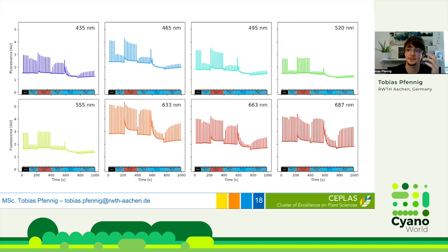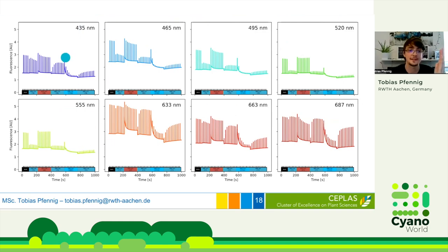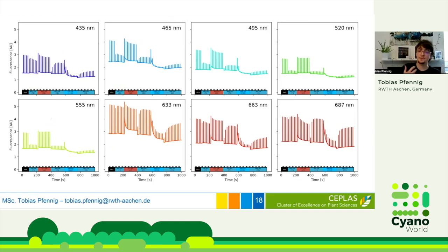Since we model light absorption in a pigment-dependent manner, we can also simulate the behavior of differently adapted cells. Here you can see simulations of cells grown at monochromatic light sources, whose pigment content was measured. We then simulated their reaction to the same light protocol. The fluorescence responses differ quite widely — not just in height but also in which processes engage or even don't engage — illustrating how light quality, quantity, and cellular pigment absorption interplay, and how important it is to consider all these factors when discussing photosynthesis.